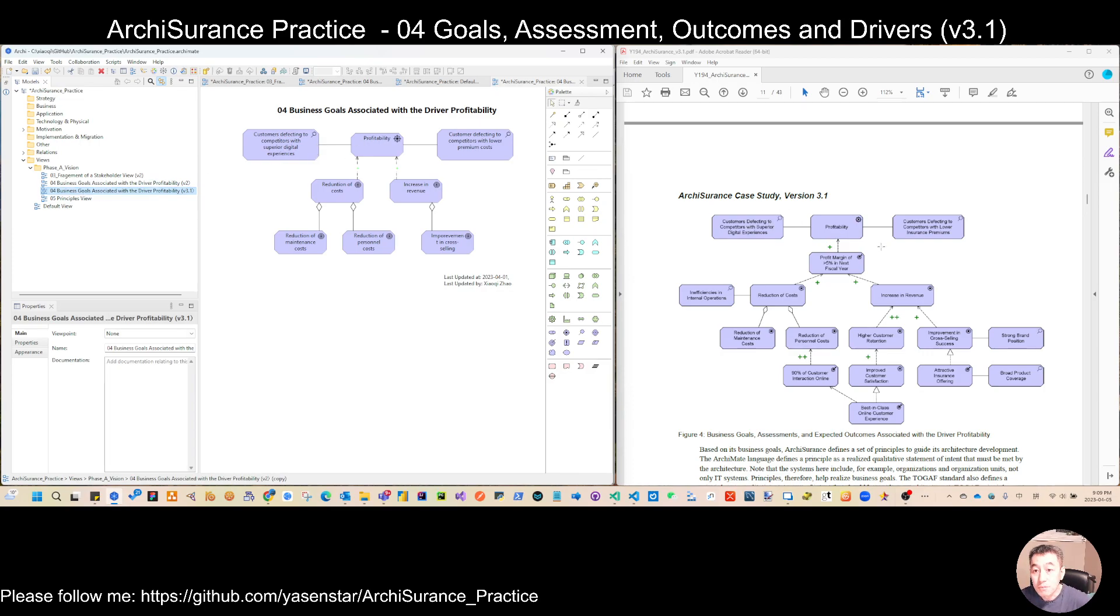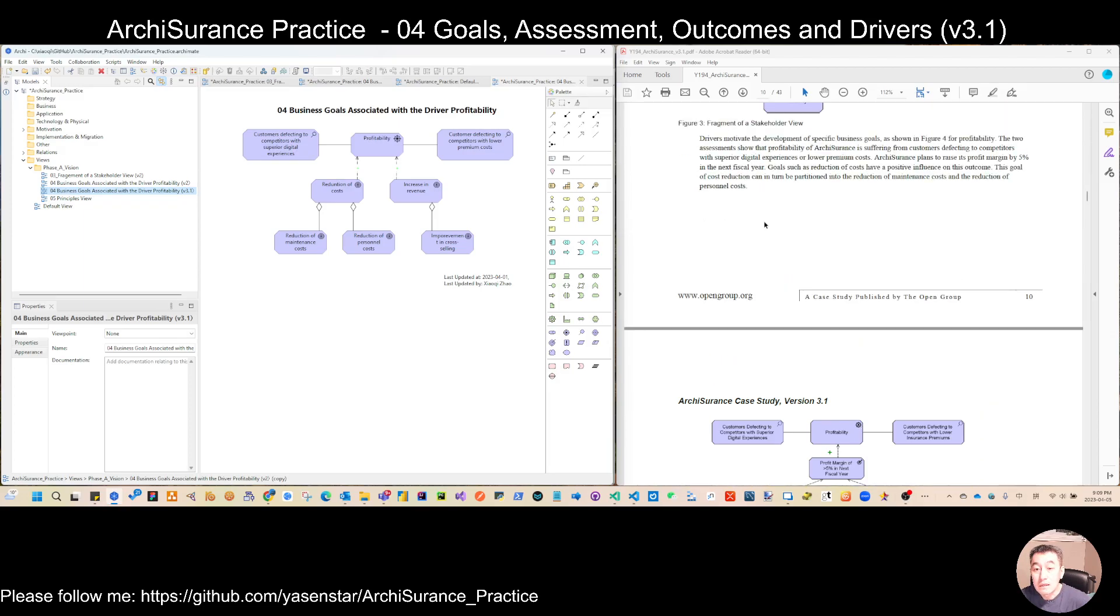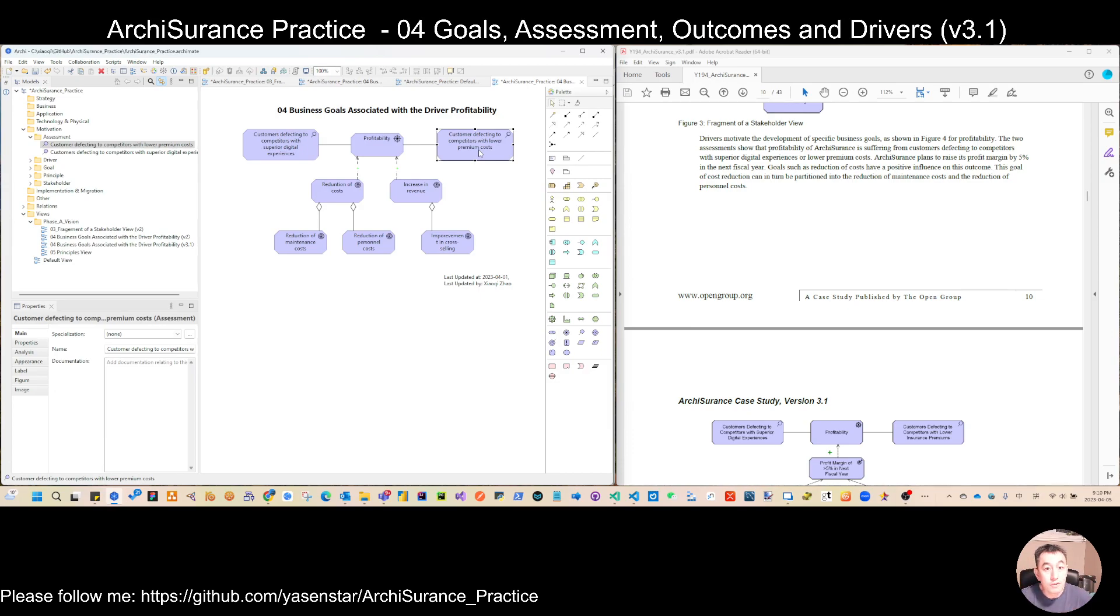The difference, if we can see, is product profitability. When we read the description, profitability is a final driver or we can say it's an initial driver. The ArchiSurance want to do this as the target. And we have the same two assessments we already did. But I can see here one assessment is customer defecting to competitors with superior digital experience. The right part is customer defecting to competitors with lower premium cost. So here we see there's a little difference.